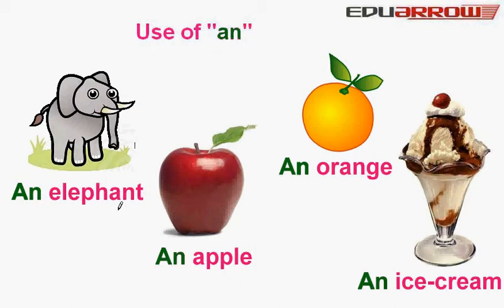An elephant. We add 'an' before elephant because the beginning letter of elephant, E, is a vowel. An orange.